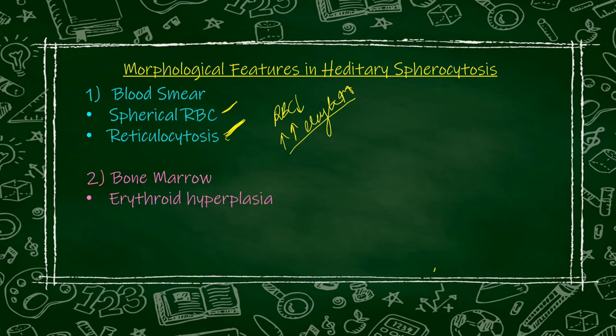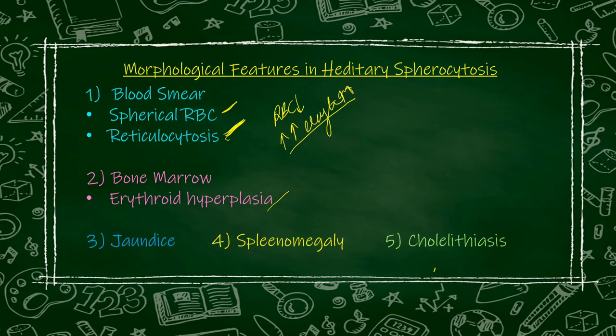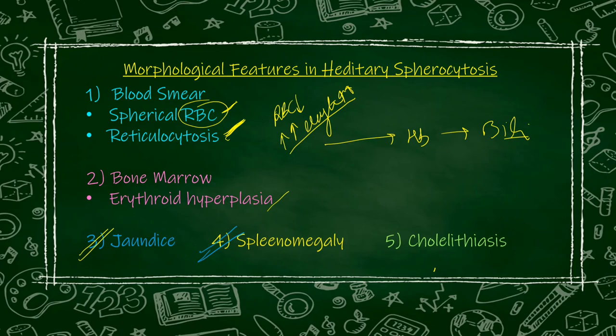In bone marrow findings, erythroid hyperplasia will be seen — meaning the cells in the bone marrow that form RBCs will have an increased number. Erythroid means RBC, hyperplasia means increased number, so increased number of RBC-forming cells will be visible in bone marrow. Then jaundice — because as RBCs break down, hemoglobin is released, which converts to bilirubin, causing jaundice. Then splenomegaly, because RBC destruction is occurring in the spleen.